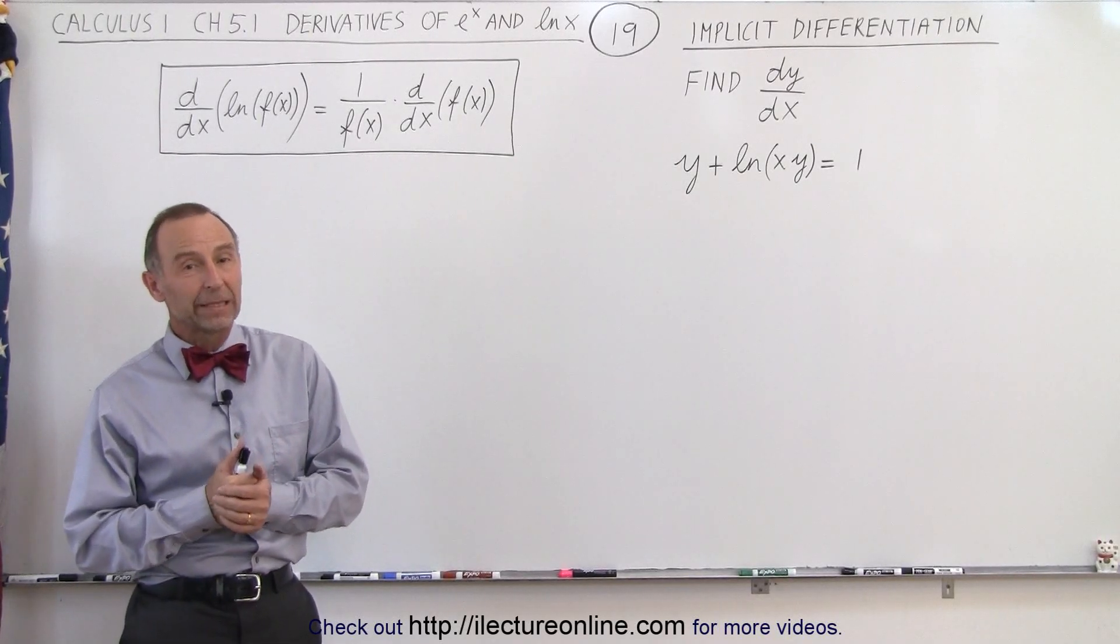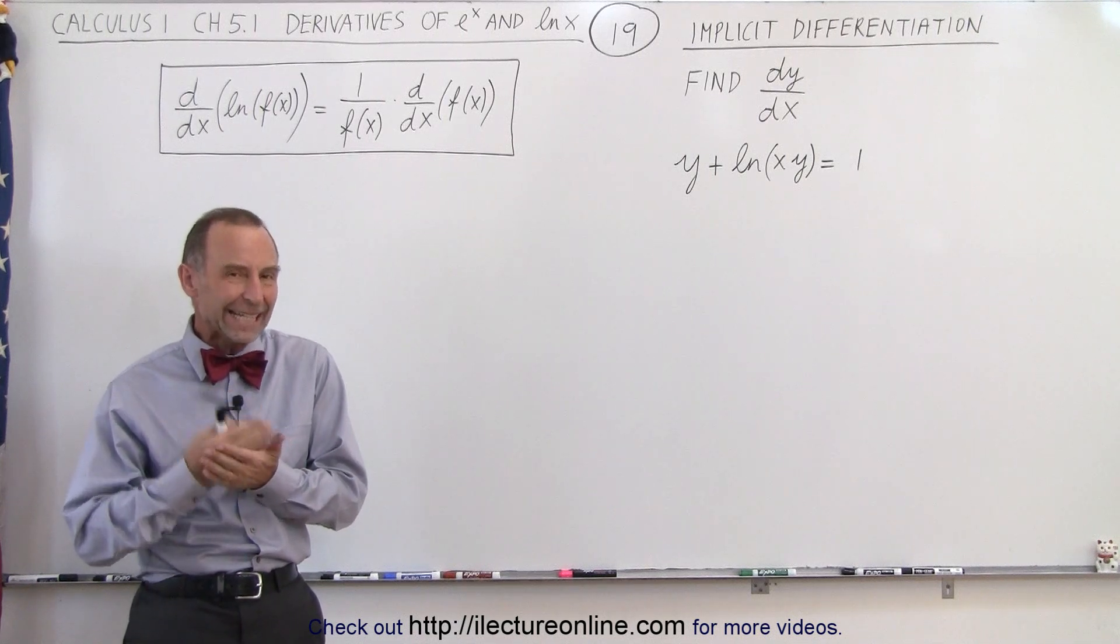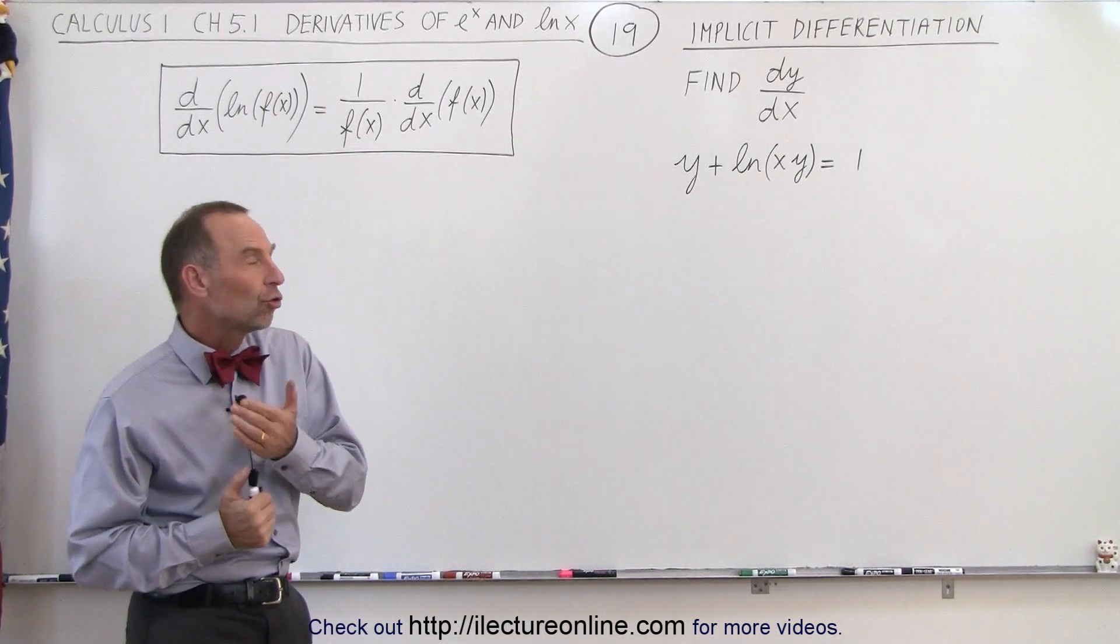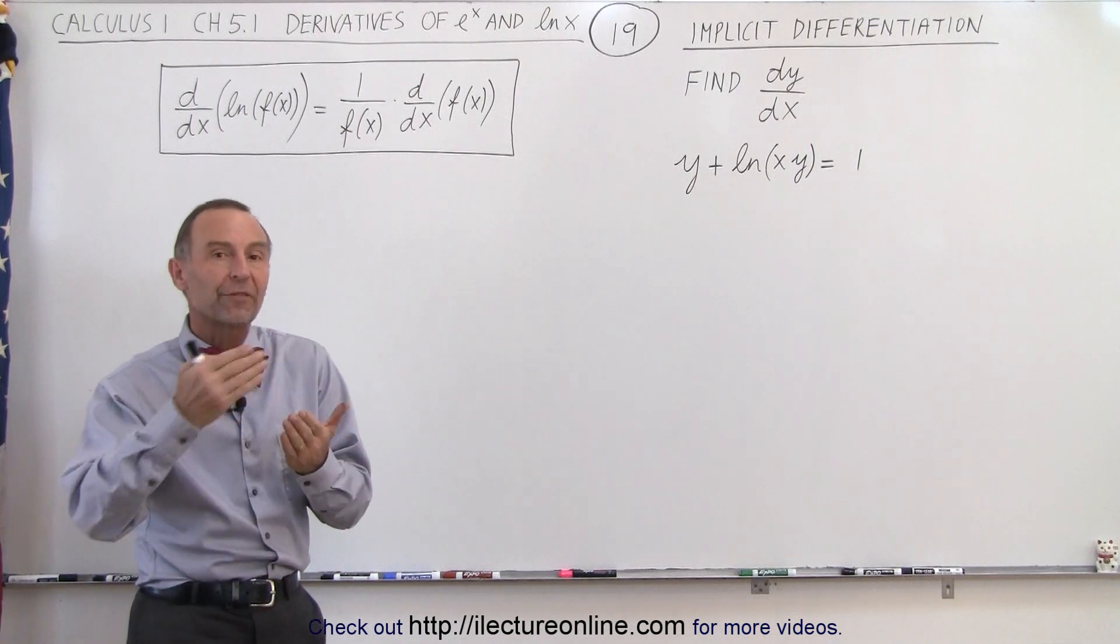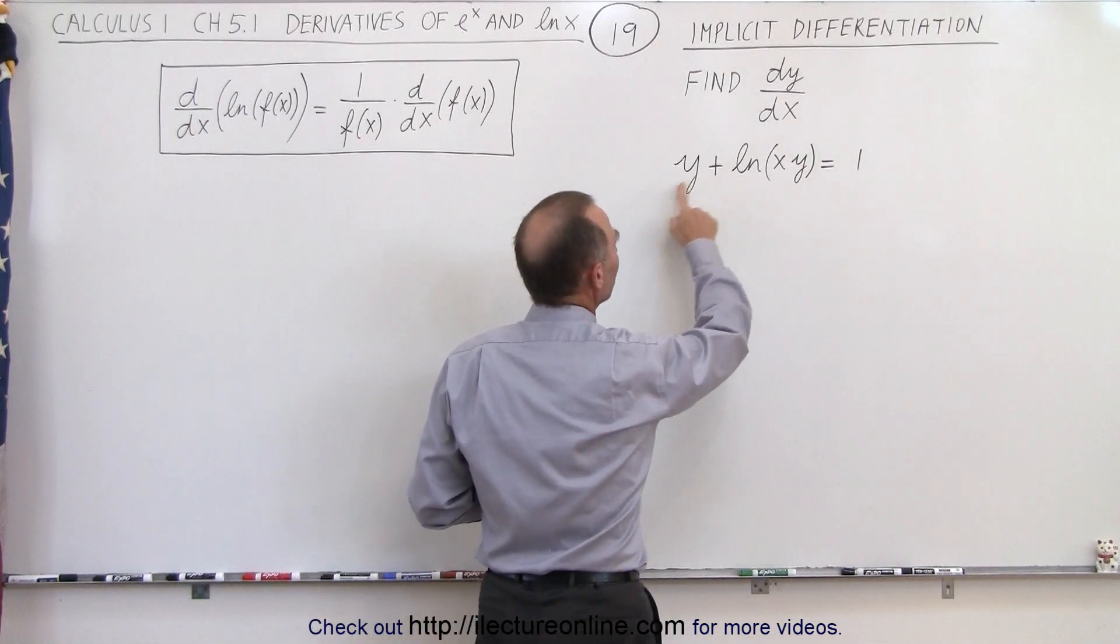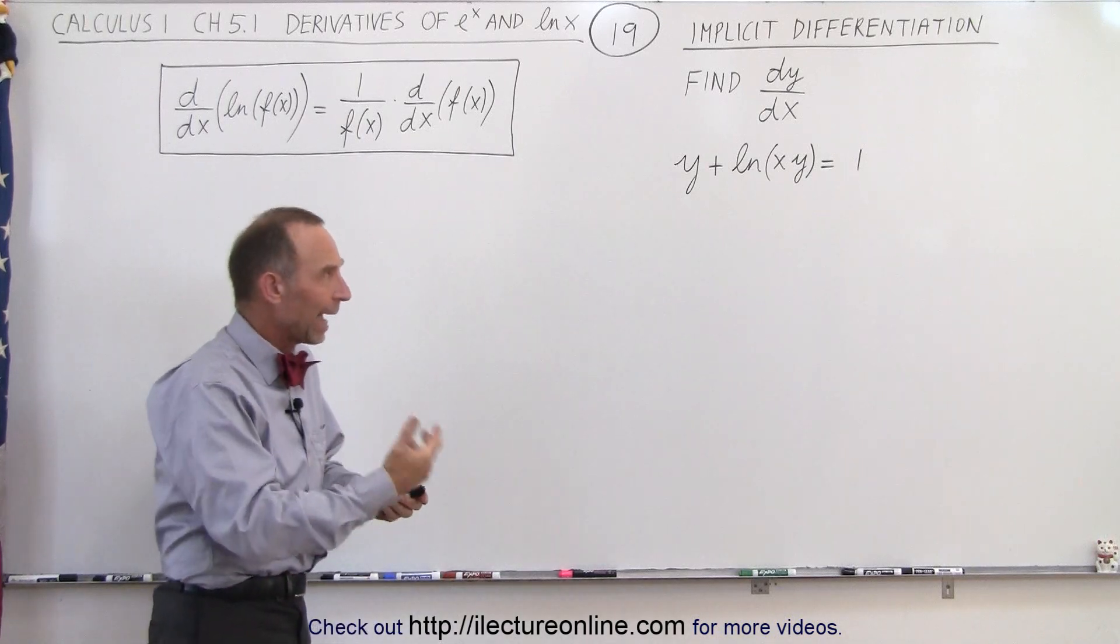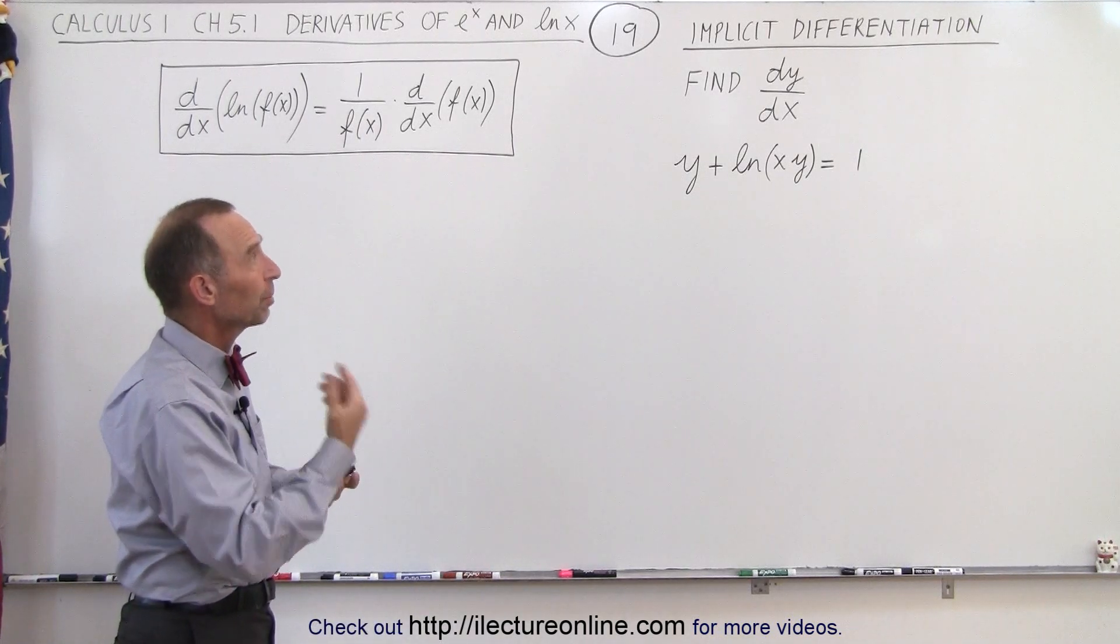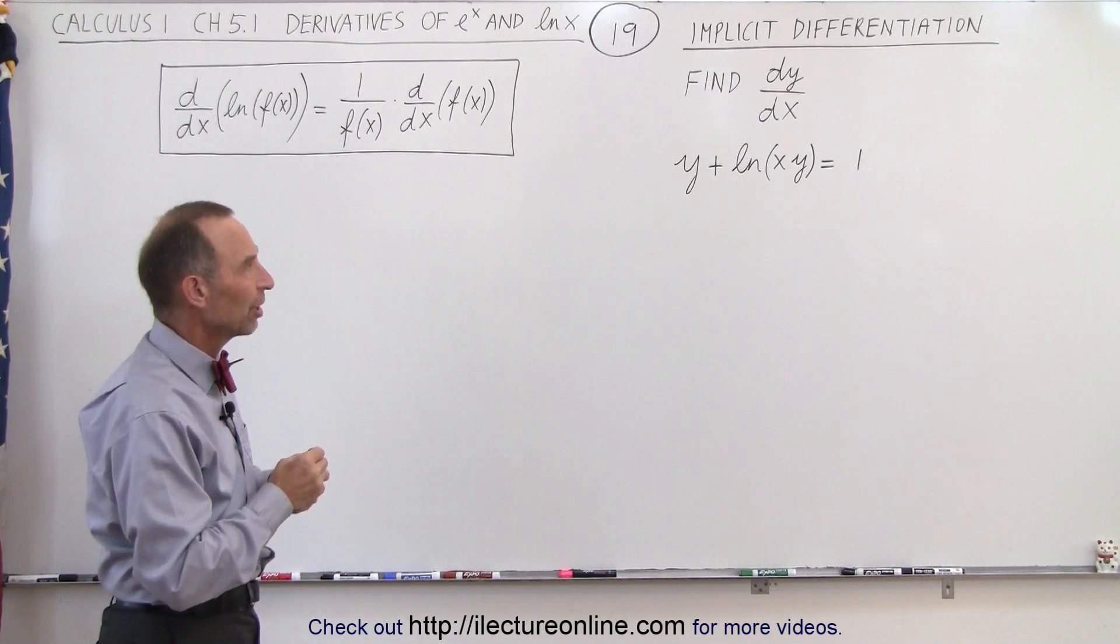Welcome to iLectureonline. Sometimes we have to find the derivative by using a technique called implicit differentiation. This is usually done when you're not able to solve for y in terms of x in our equation. Notice y appears here and it appears again as an argument inside the natural log function. So trying to isolate y would be difficult to then find dy/dx explicitly. That's why we call it implicit differentiation.